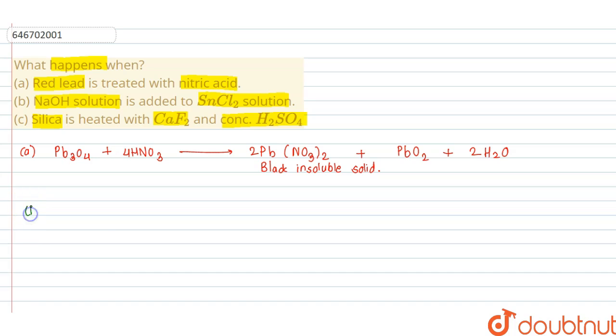Then second reaction is NaOH solution is added to SnCl2 solution. So NaOH with stannous chloride SnCl2 gives stannous hydroxide Sn(OH)2 and NaCl.